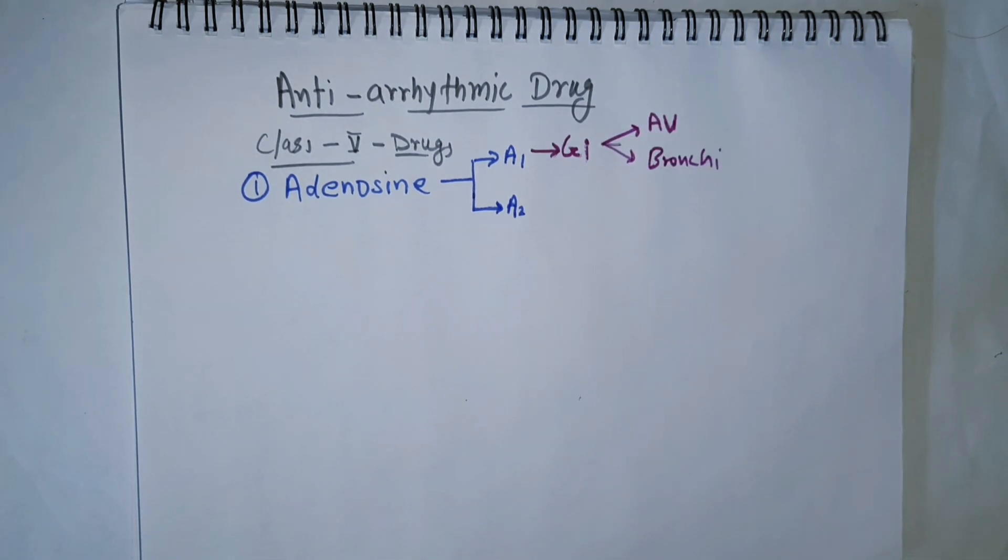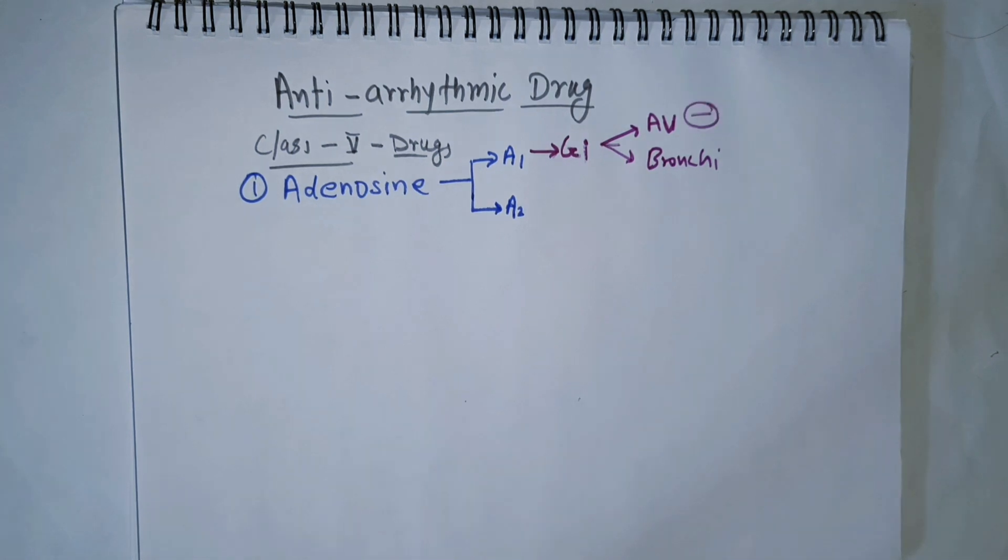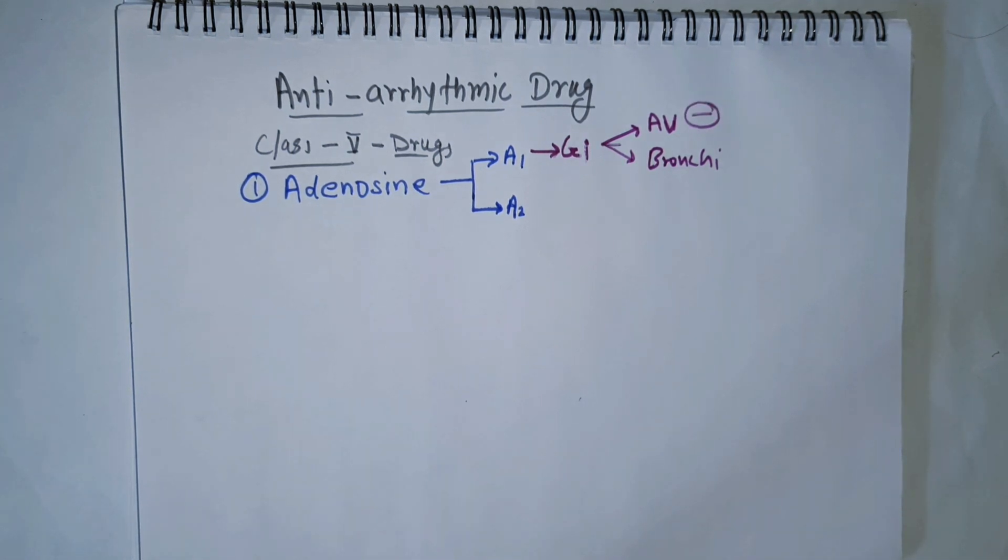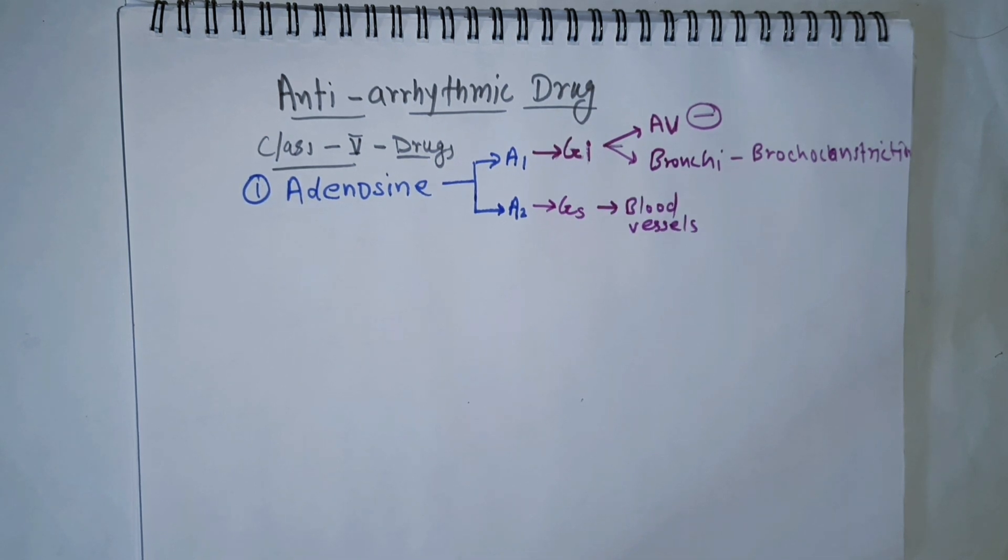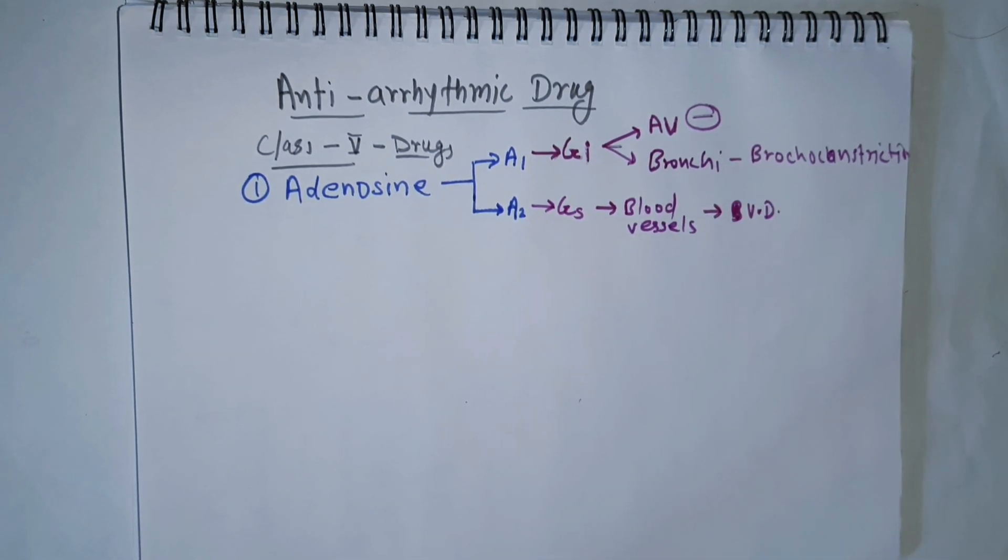A1 receptors are present in AV node and bronchi, showing blocking effect in AV node and bronchoconstriction in bronchi. Whereas A2 receptors are Gs-type receptors present in blood vessels, where they cause vasodilation.